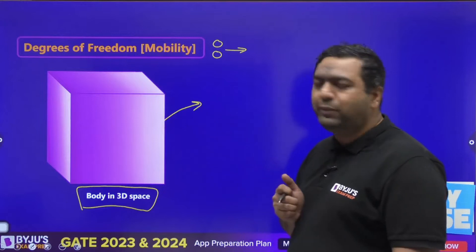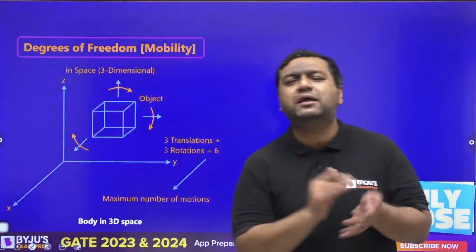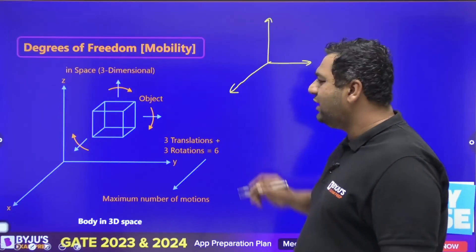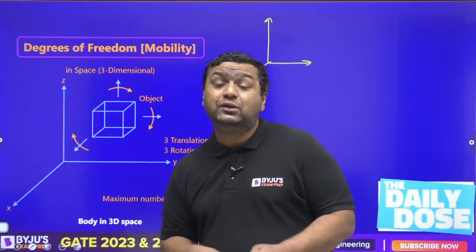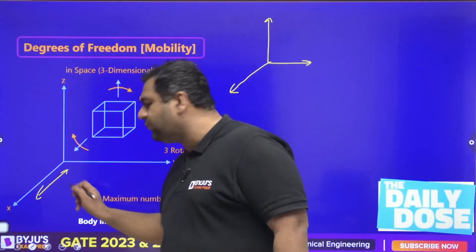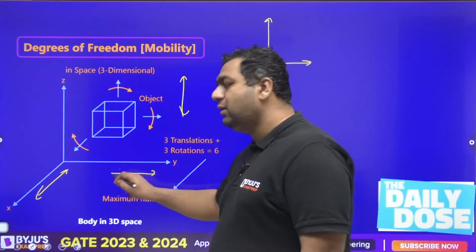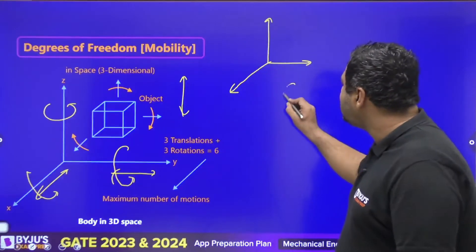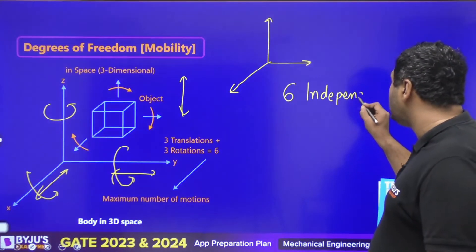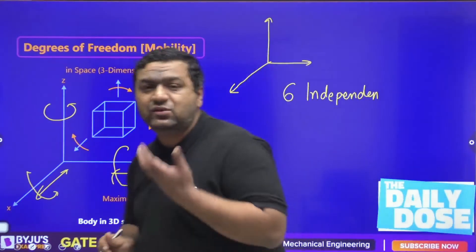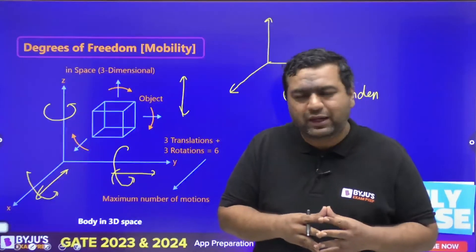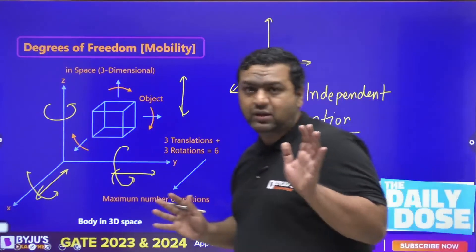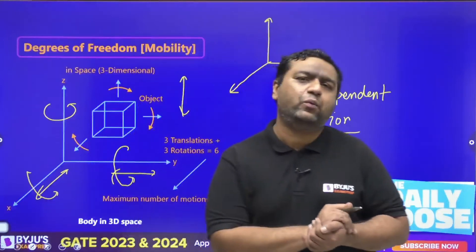Consider a body in 3D space — a three-dimensional cuboid. For this body, the maximum degree of freedom possible is six: translation about x, translation about y, translation about z, rotation about x, rotation about y, and rotation about z. So there are six independent motions possible for an independent body in three-dimensional space. However, for vibration systems the story is totally different — the maximum is not necessarily six, as I will show with examples.